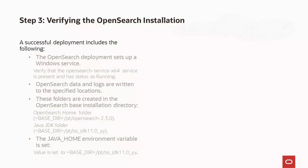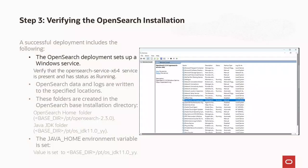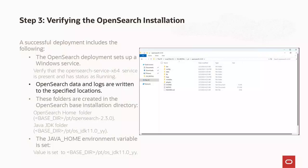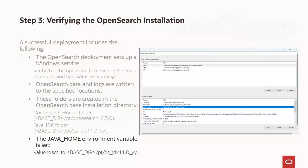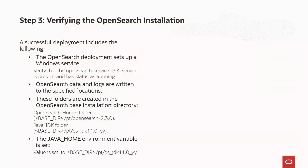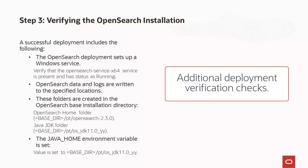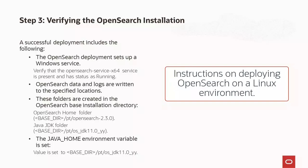On your environment, you may perform checks on the file structure and environment variables to ensure that the deployment is successful, which includes verifying the OpenSearch Windows service, data and log files, folders for OpenSearch Home and Java JDK, and the environment variable for Java Home. Refer to PeopleSoft Deployment Packages Installation for Search Components PeopleTools 8.61, which contains additional information such as additional deployment verification checks, steps to remove an OpenSearch installation on Windows, and instructions on deploying OpenSearch on a Linux environment.